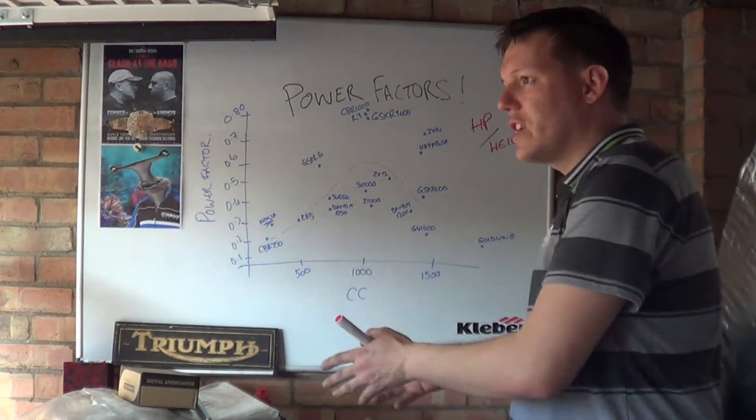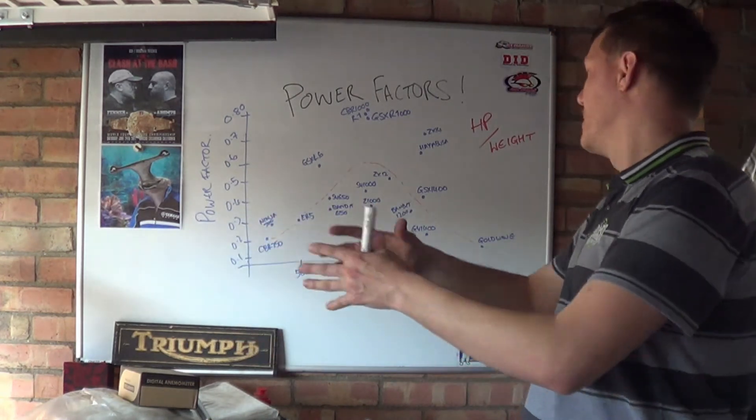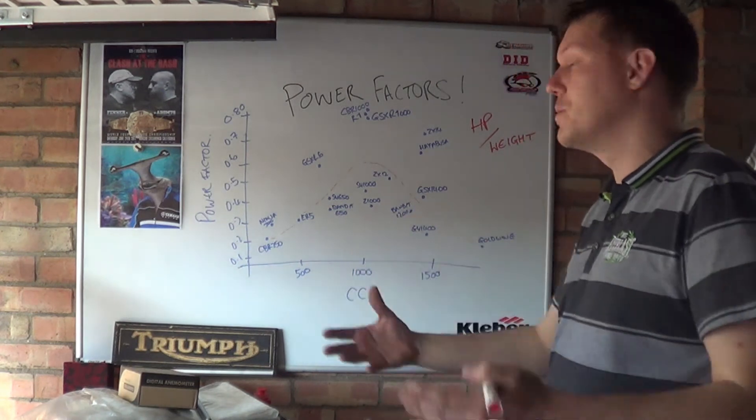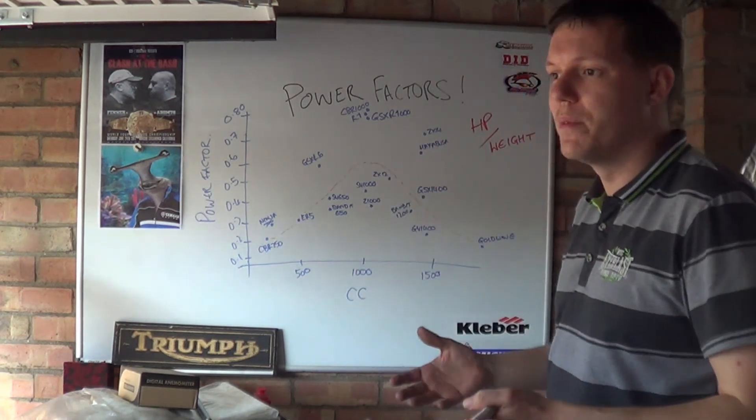You can only make fighter aircraft so small because of the size of a man. You've got to have a man, an ejector seat, he's got to have controls, that makes you so big, which makes the rest of the aircraft so big to propel something that size that fast and have that much manoeuvrability.